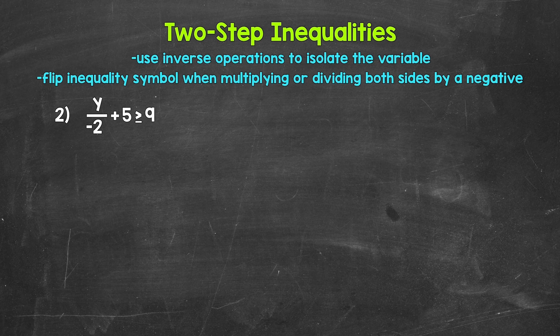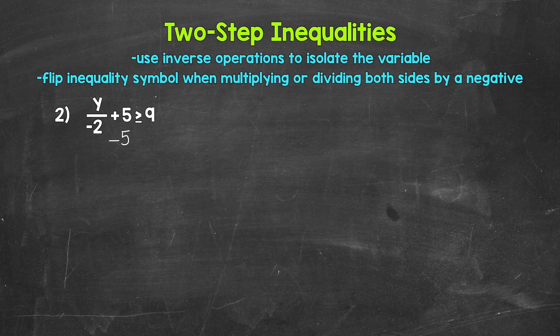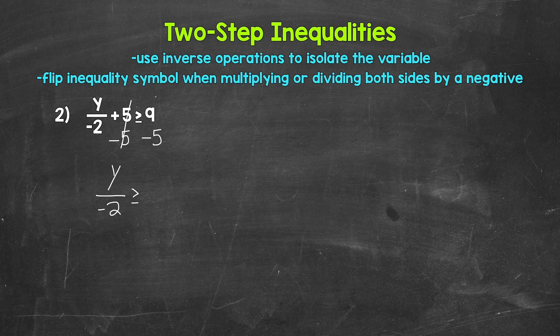Taking a look at number 2, we have y divided by negative 2 plus 5 is greater than or equal to 9. Just like before, we go in the reverse order of operations. So we need to undo the addition first, then the division. The inverse operation of addition is subtraction, so subtract 5 from both sides. The 5s cancel on the left, and on the right, 9 minus 5 gives us 4.